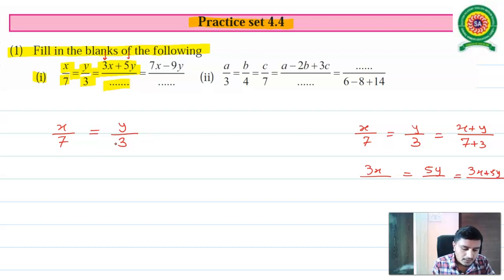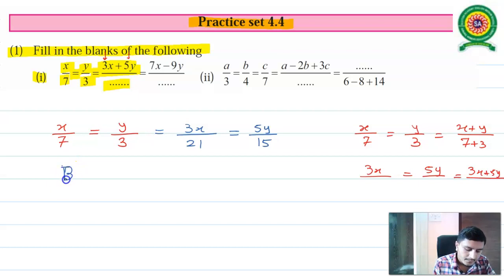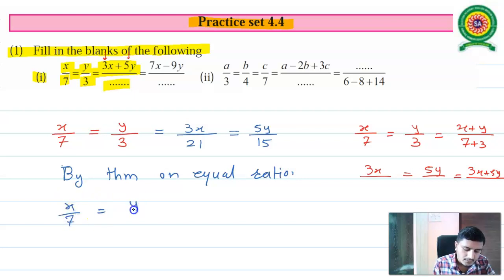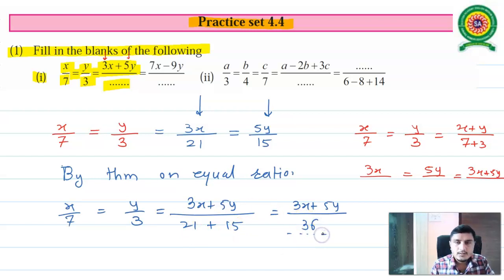Multiplying and dividing the first ratio by 3 we get 3x/21, and the second ratio multiplied and divided by 5 gives 5y/15. Now by theorem on equal ratio, x/7 = y/3 = (3x+5y)/(21+15). Adding the denominators: 21+15 = 36. So the fill in the blank answer is 36.